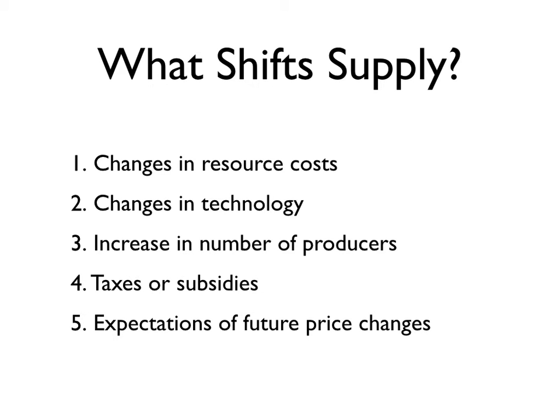And then the expectation of future price changes. If a gas refinery expects the price of gas to double overnight, they're going to withhold their production of gasoline or their sales of gasoline for that day, and the price will go up. That will shift the supply curve up to the left.